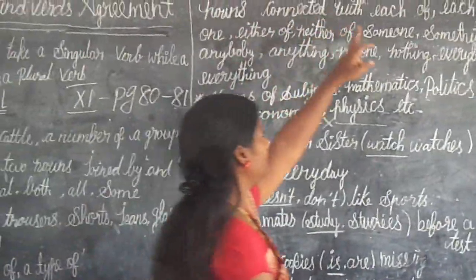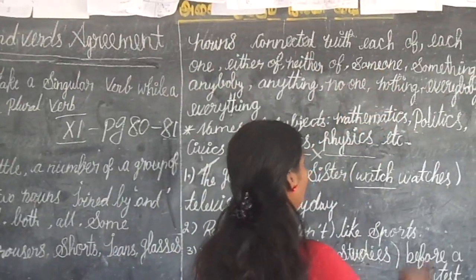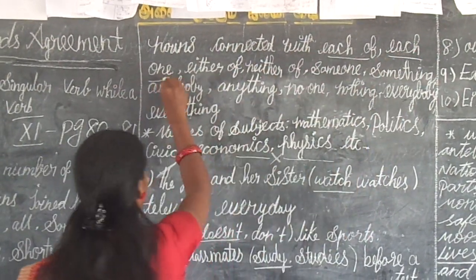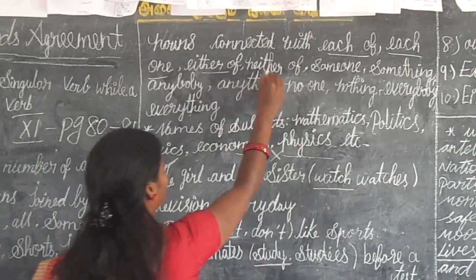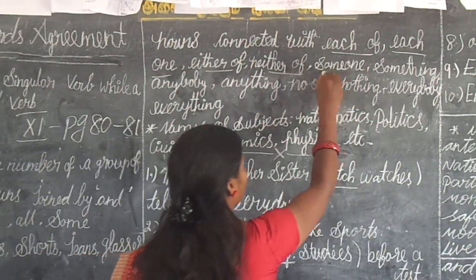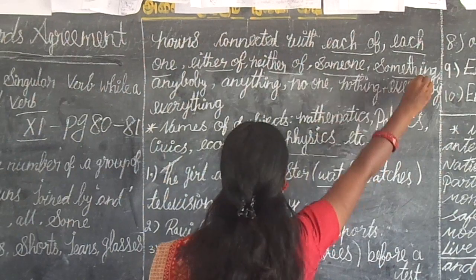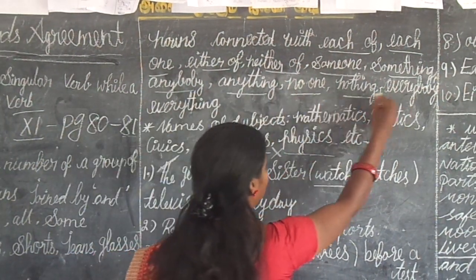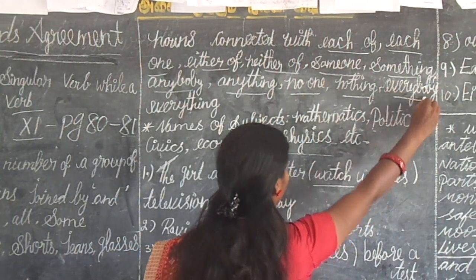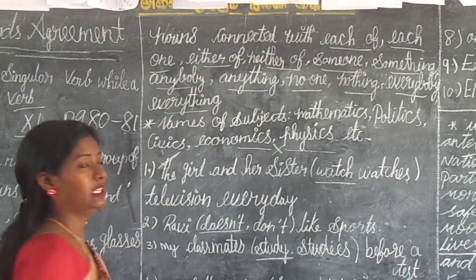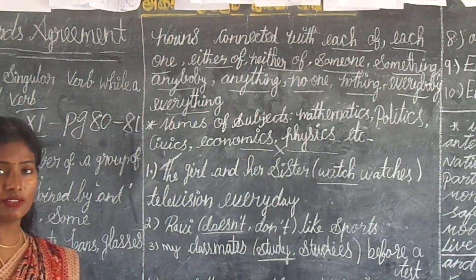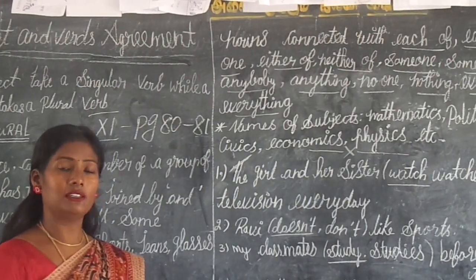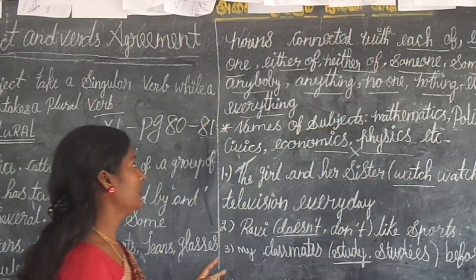Nouns connected with each of, each one, either of, neither of, someone, something, anybody, anything, no one, nothing, everybody, everything — all of these take a singular verb.